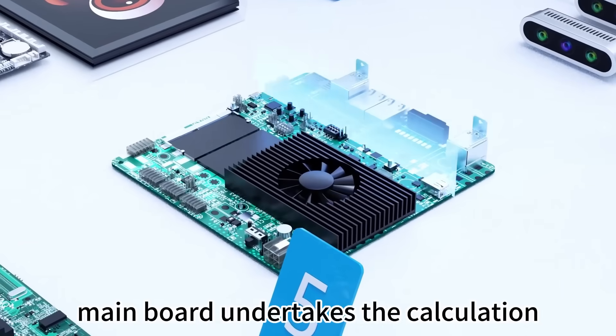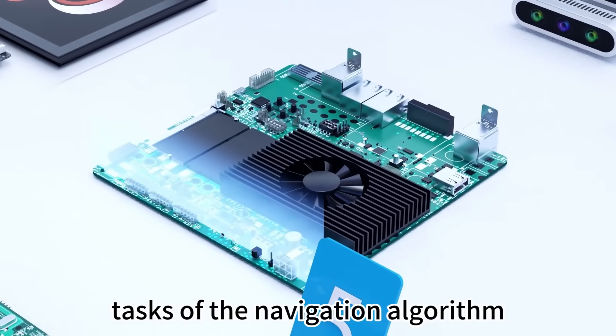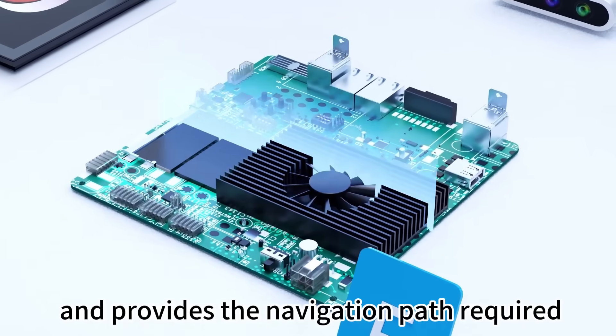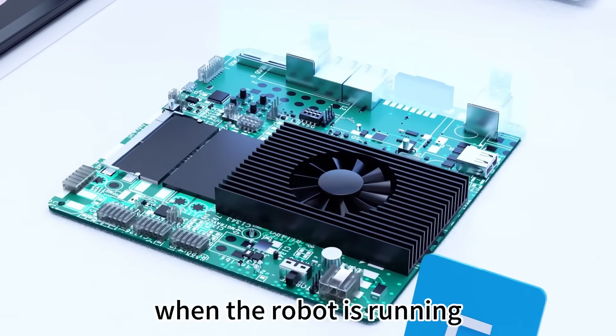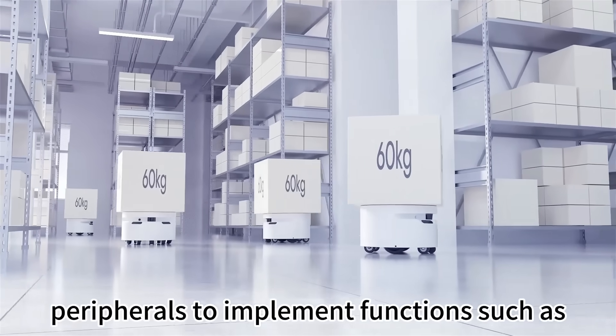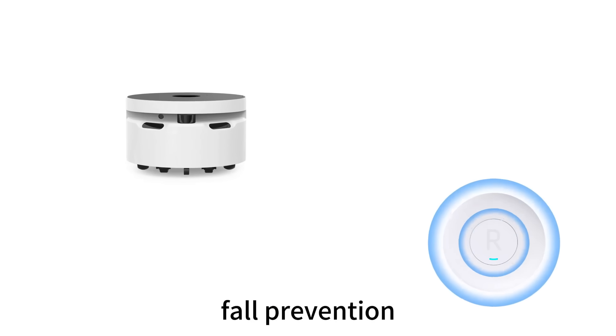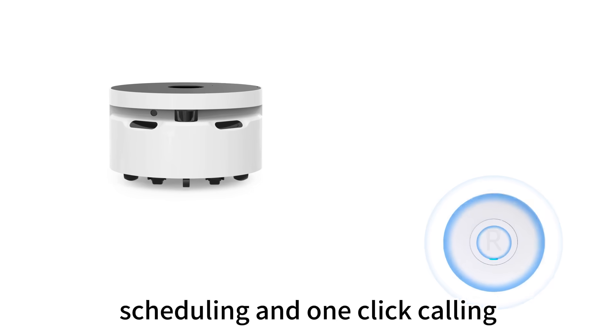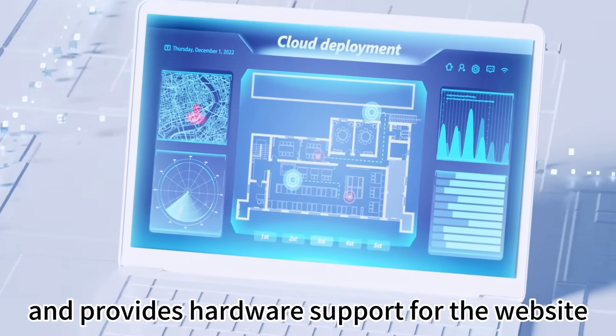The navigation mainboard undertakes the calculation tasks of the navigation algorithm and provides the navigation path required when the robot is running. In addition, it also works with other peripherals to implement functions such as obstacle avoidance, fall prevention, scheduling, and one-click calling, and provides hardware support for the website.